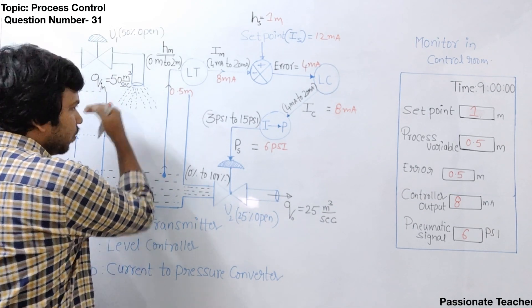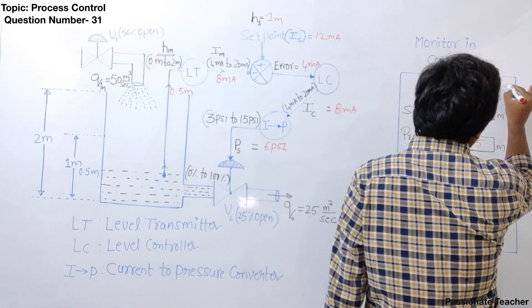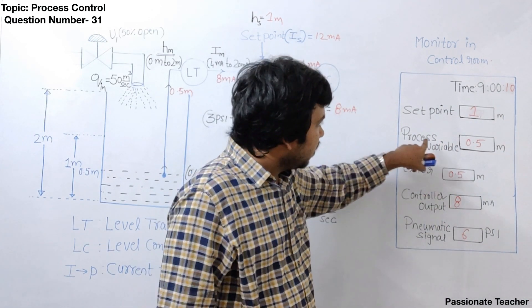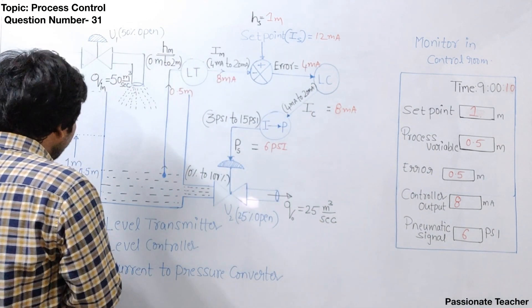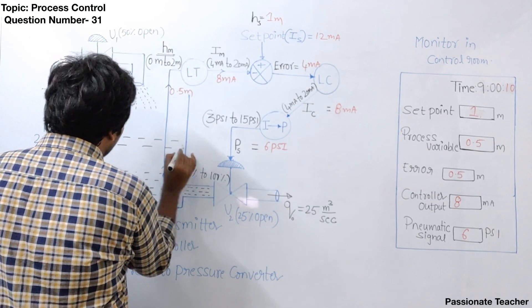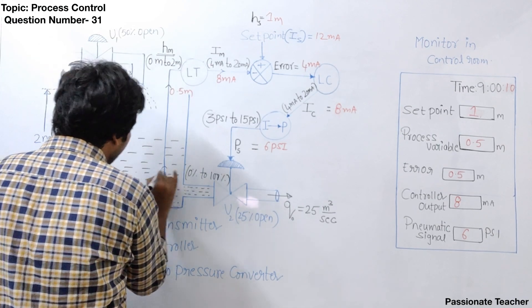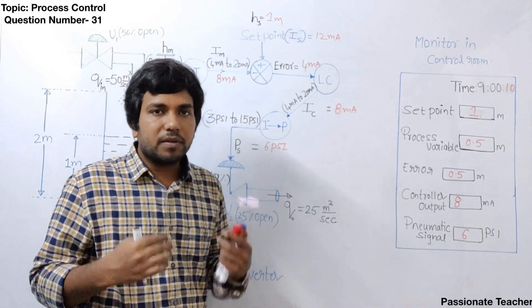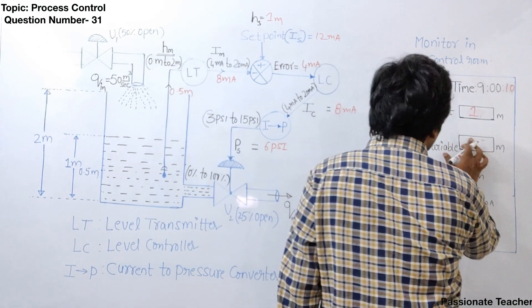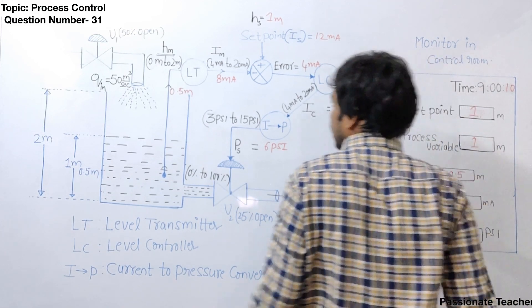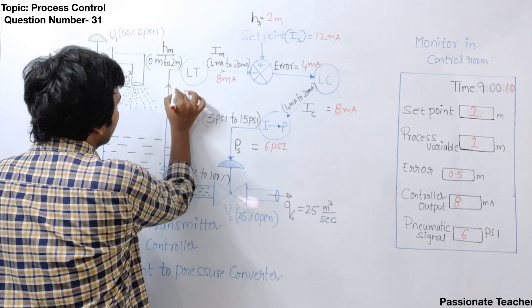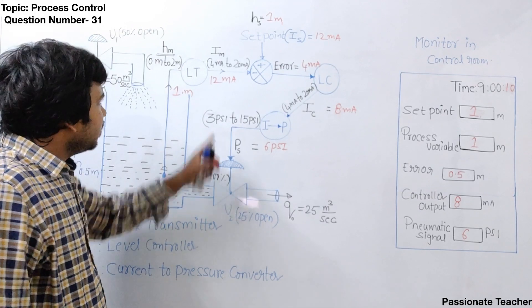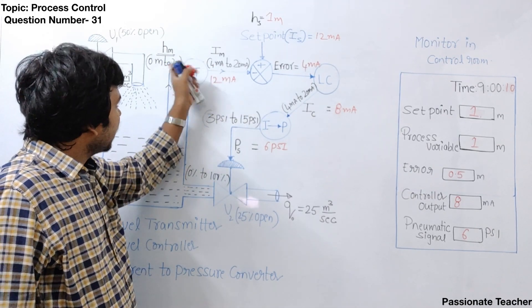If we wait for 10 seconds, the setpoint remains unchanged but the process variable will slowly change. Let's say after 10 seconds the process variable reaches 1 meter. Whether it reaches 1 meter in 10 seconds depends on many factors such as the cross-sectional area of the tank and the resistance of the valves. Assuming the water level reaches 1 meter after 10 seconds, the level transmitter will generate a current proportional to this water level — which will be 12 milliampere.